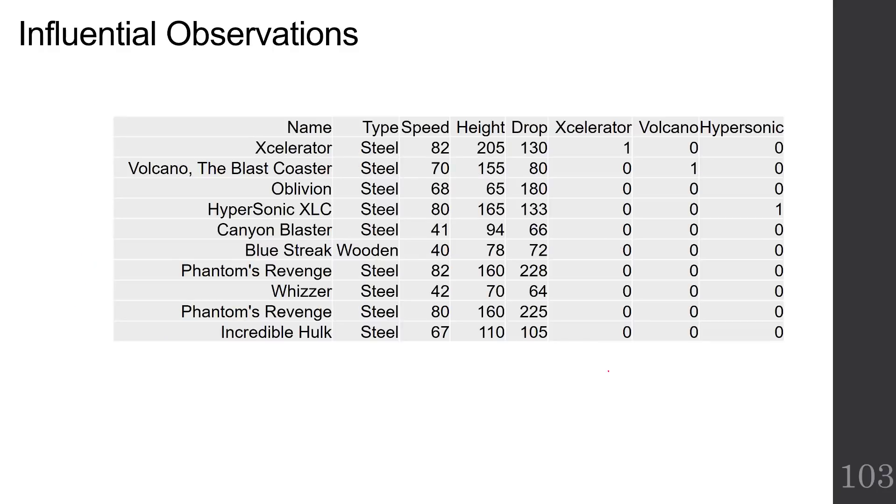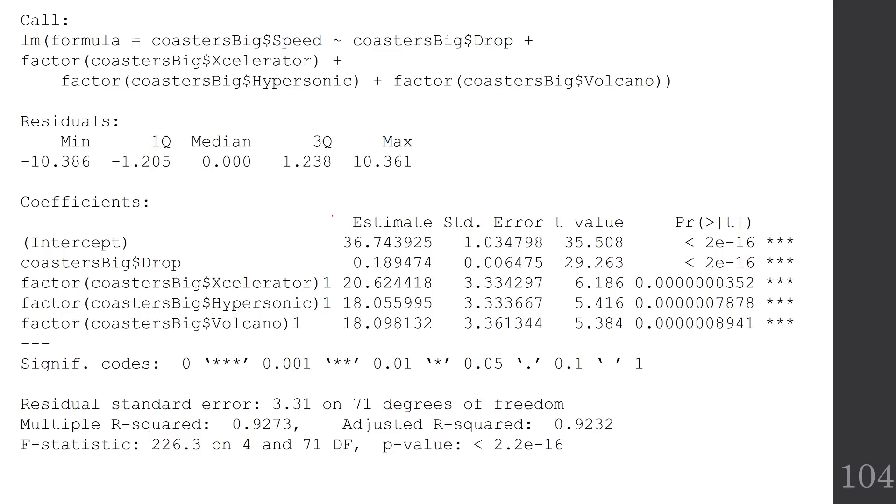What I've done is I've created three extra columns in my Coaster data set for my indicator variables. Notice that my 1 for accelerator puts a 1 in the column that has accelerator's data and a 0 everywhere else. For volcano, it puts a 1 in the line that has volcano in it. And for hypersonic, it puts a 1 for the row that contains the hypersonic data. There's 0 everywhere else. That's all there is to it to create an indicator variable.